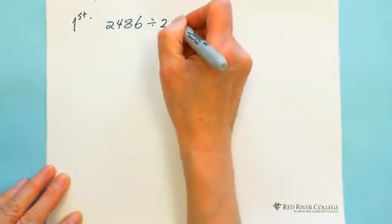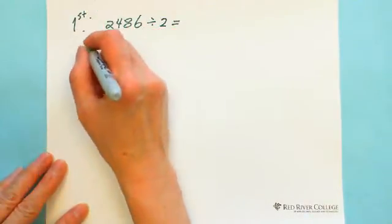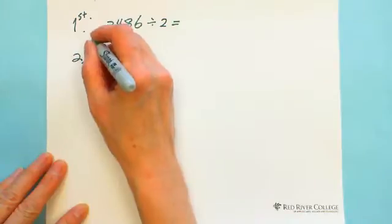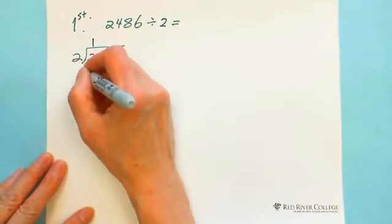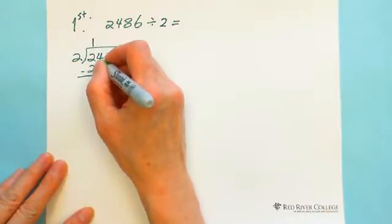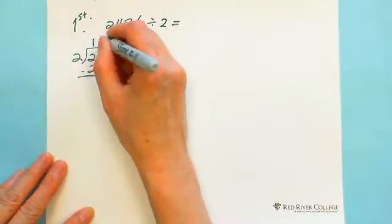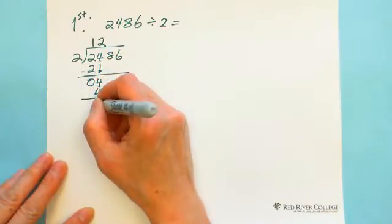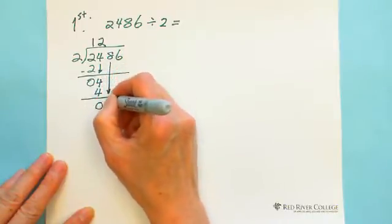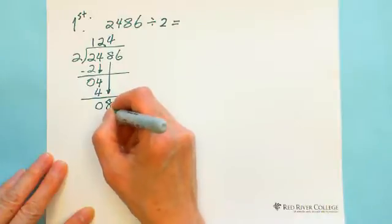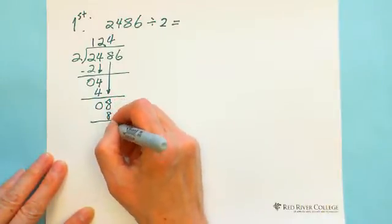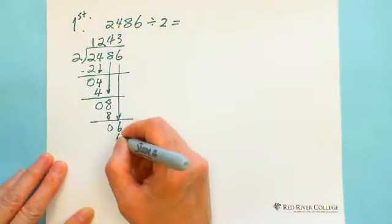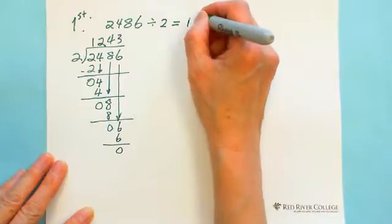So we divide: 2 divided by 2 is 1. 2 minus 2 equals 0, so carry down. The next digit is 4, and 2 times 2 equals 4, and 4 minus 4 equals 0. We carry down 8; 2 multiplied by 4 is 8, and 8 minus 8 equals 0. We carry down 6; then 2 times 3 equals 6, and it's divisible. The answer is 1, 2, 4, 3.